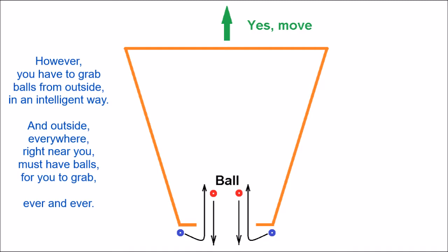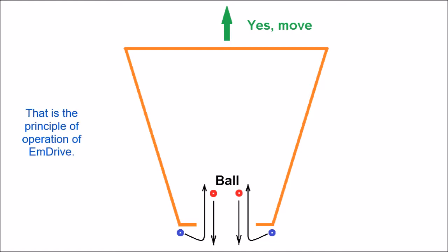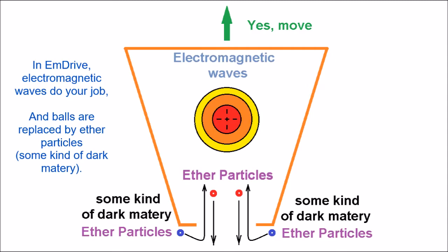However, you have to grab balls from outside in an intelligent way. And outside, everywhere, right near you, there must have balls for you to grab, ever and ever. That is the principle of operation of the M drive. In the M drive, electromagnetic waves do your job, and balls are replaced by ether particles — some kind of dark matter.